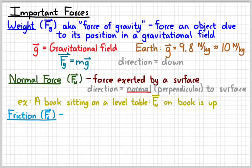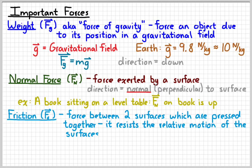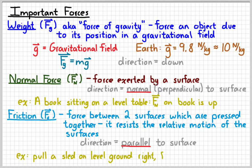The third important force is called the force of friction, given the symbol F with the subscript little f. This is the force between two surfaces which are pressed together, and it resists the relative motion of the surfaces. Friction is trying to keep two surfaces from moving relative to each other — kind of like glue, it tries to keep the surfaces stuck. Friction always acts parallel to the surface. For example, if you're pulling a sled to the right, friction is going to pull the sled to the left, opposing the motion.